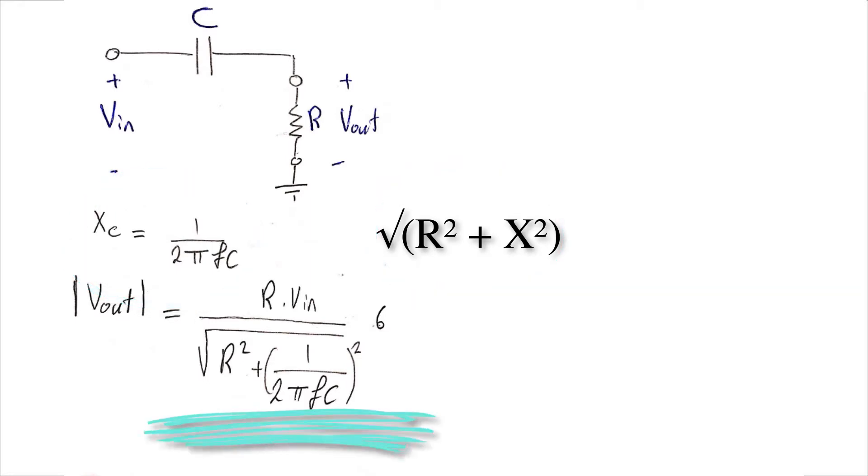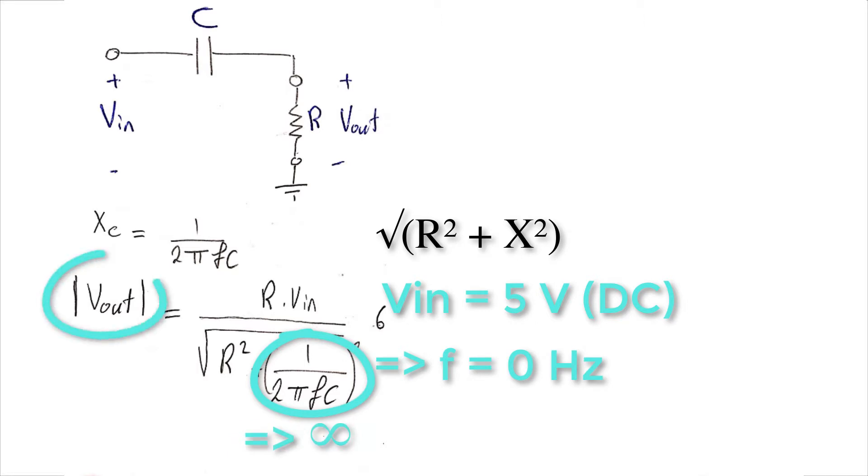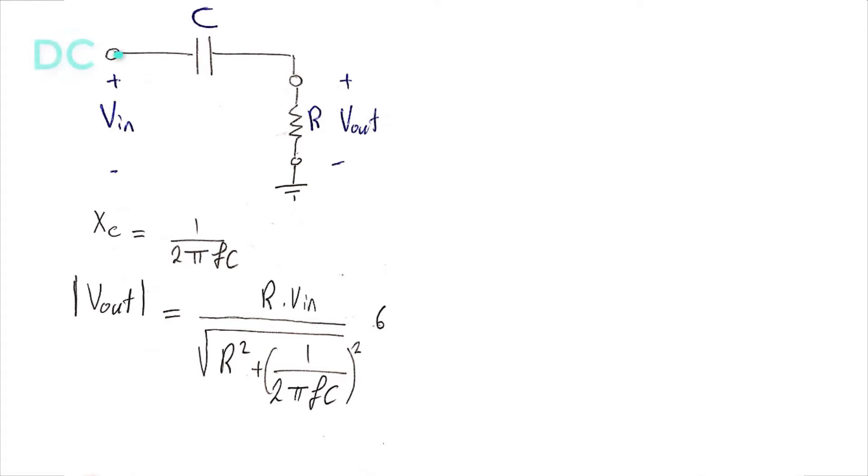Now we have the output voltage amplitude formula in terms of the input voltage. To see the beauty of this simple circuit, let's apply DC voltage at the input. And as we know, DC voltage has zero frequency. By applying this to the output voltage amplitude formula, this term will go to infinity, which will lead the output voltage to go to zero. This means that this circuit blocks DC voltage.